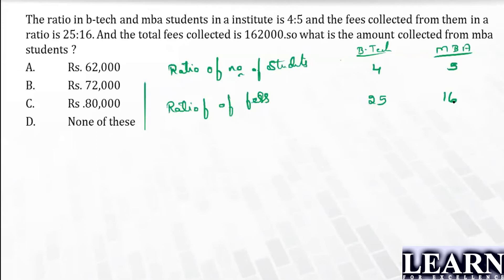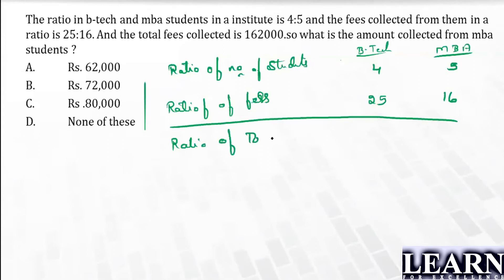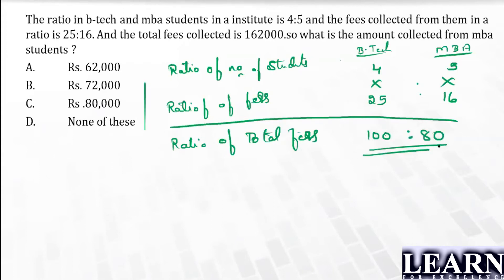The total fees collected is nothing but number of students multiplied by fees. So the ratio of total fees is the product of the two ratios: 4×25 for BTEC is 100, and 5×16 for MBA is 80.